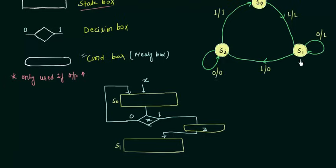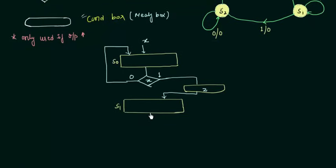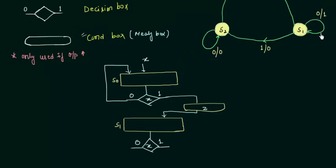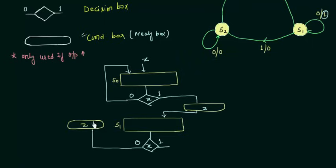Now we move to state S1. Let me make the decision box first — this is the decision box for X, with branches 1 and 0. If input X is equal to 0, I remain on S1, but the output is 1, so I definitely need a condition box. Z is the output, and I will go back to the same state S1.